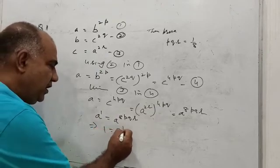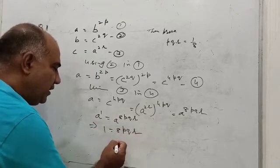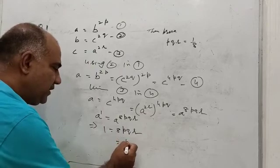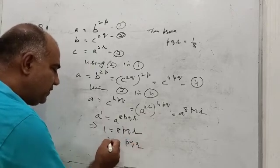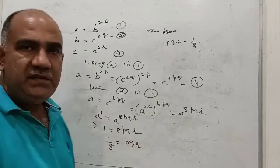From here you can write pqr = 1/8. So that's all.